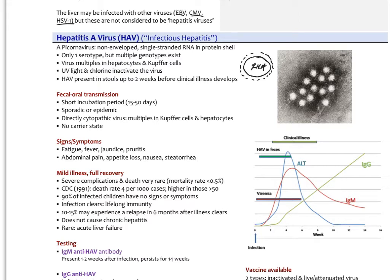There's only one serotype but a lot of different genotypes. The virus infects the hepatocytes and Kupfer cells and multiplies there. UV light and chlorine are very effective at inactivating the virus. The hepatitis A virus is actually detected in patients in the stools up to two weeks before any clinical illness develops.